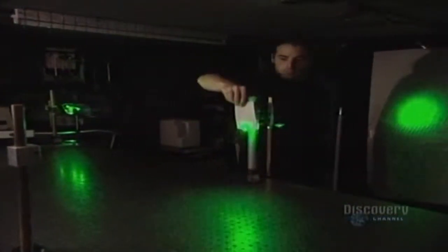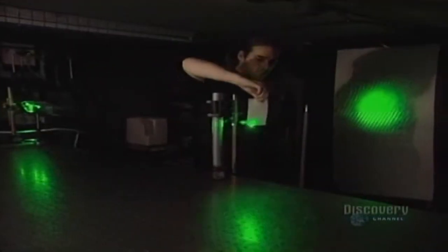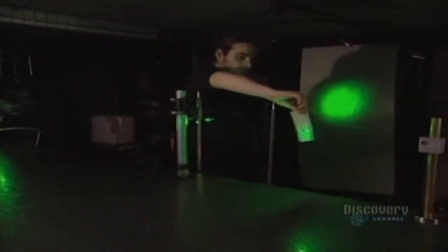A shutter, when activated, either blocks the light ray or lets it pass through. Here the beam is split in two, at a 90 degree angle.